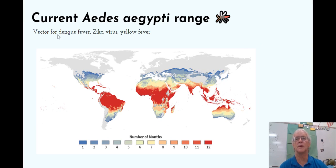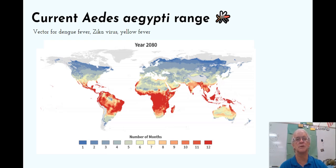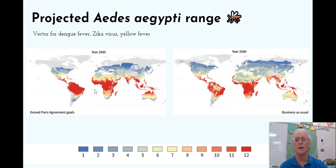Here is where the current vectors for dengue fever, Zika virus, and yellow fever can be found. Here in the red, it's 12 months a year; here, it's only one month a year. It is expected that by the year 2080, due to increases in climate change and warmer temperatures, LA, Florida, and most of Central America will have the mosquito, and India and Southeast Asia will have the mosquito 11 to 12 months a year. If we exceed the Paris Agreement goals, it will not be business as usual.